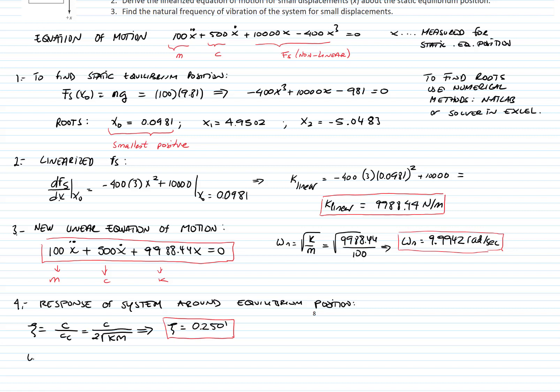Therefore, the system vibrates with the damped frequency, which is defined as the natural frequency multiplied by square root of 1 minus zeta squared. We plug in the numbers, and we get that this is 9.67 radians per second.